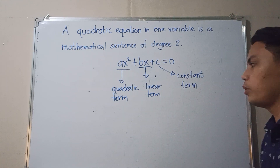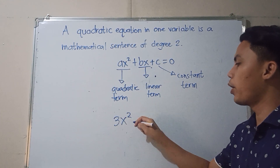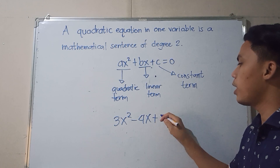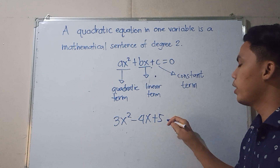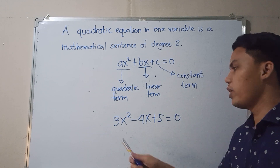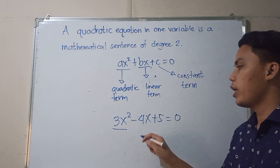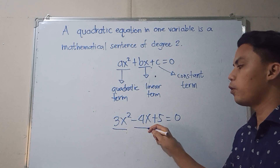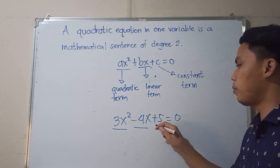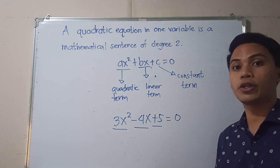For example, we have 3x squared minus 4x plus 5 is equal to 0. So, 3x squared is our quadratic term, negative 4x is our linear term, and positive 5 is our constant term.